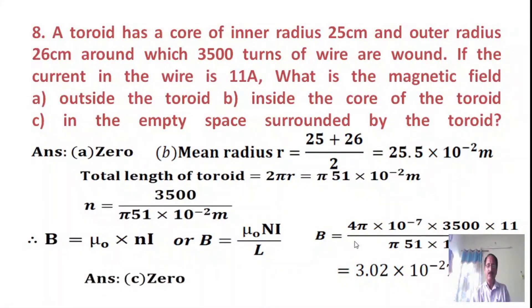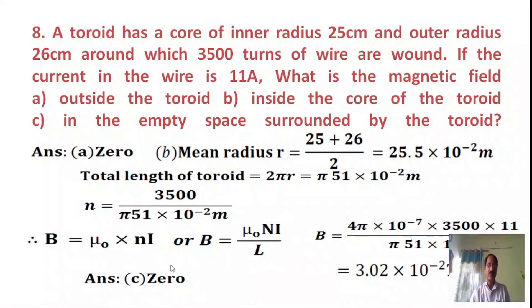As explained earlier, the field outside the toroid and at the empty space surrounded by the toroid are both zero.